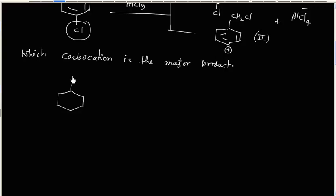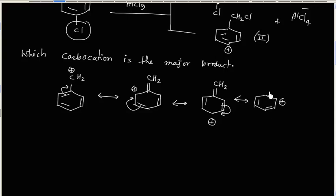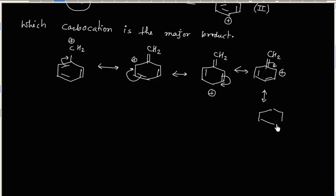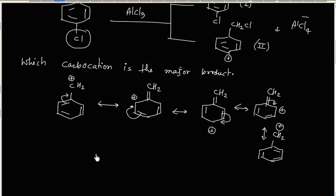For the benzyl carbocation, we can write resonating structures. There are many possible resonating structures. These are the resonating structures possible for this carbocation — we can write one more, and another resonating structure is also possible. So benzyl carbocation is resonance stabilized, but the phenyl carbocation is not resonance stabilized. So carbocation one is more stable.